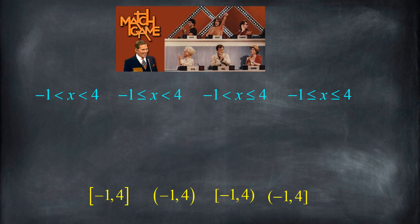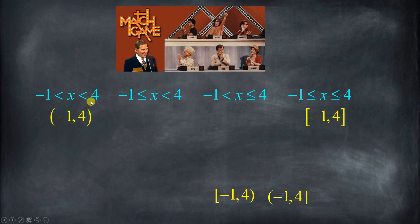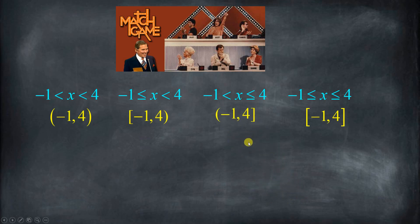So, did you say that with square brackets — because these are non-strict inequalities, less than or equal to — negative one and four are included in the inequality, so they're also included in the interval notation with square brackets. Whereas with strict inequalities, negative one and four are not included, so we use parentheses. For the mixed cases: if negative one is included but four is not, we use a square bracket on the left and a parenthesis on the right; and if negative one is not included but four is, we flip them. How'd you do?